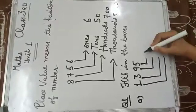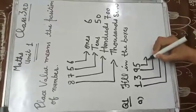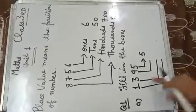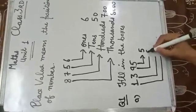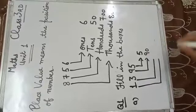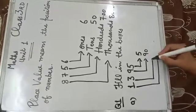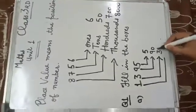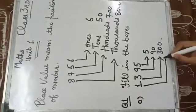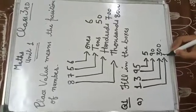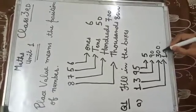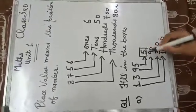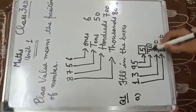Place value of 5 is 5. Place value of 9 is 90. 3 is on the hundreds place, so we write 300 here. 1 is on the thousands place, so we write 1000 here.